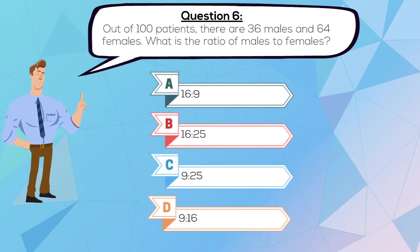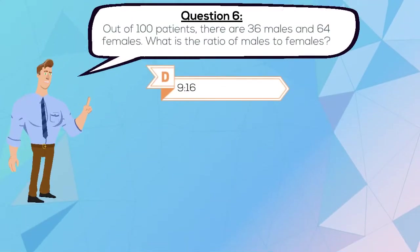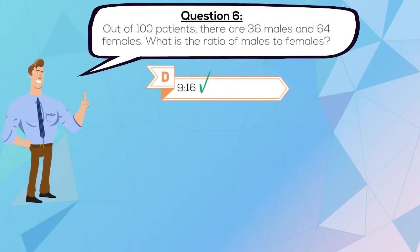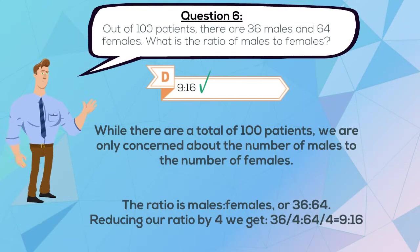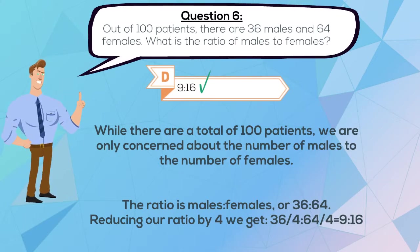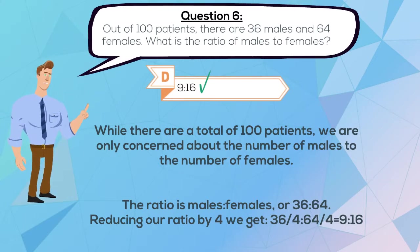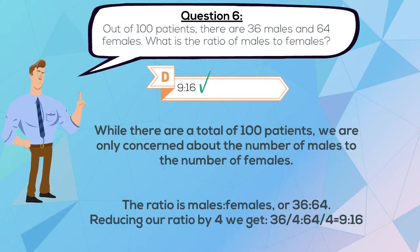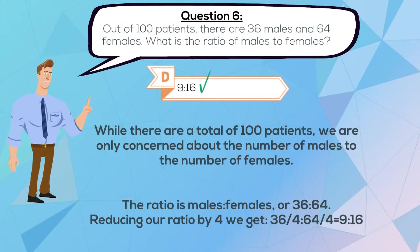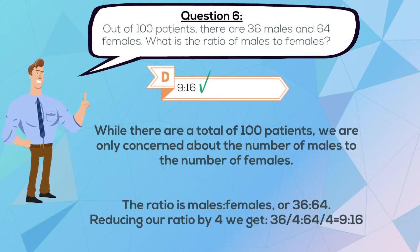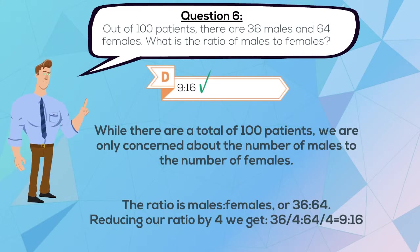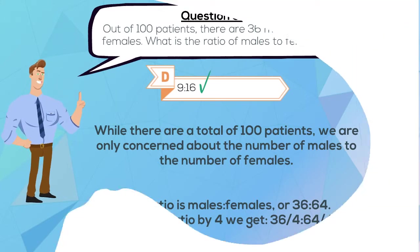The correct answer is D, 9:16. While there are a total of 100 patients, we are only concerned about the number of males to the number of females. The ratio is males to females, or 36:64. Reducing our ratio by 4, we get 36 over 4 to 64 over 4, which equals 9:16.